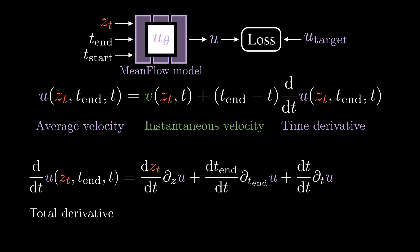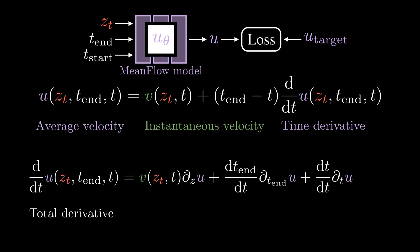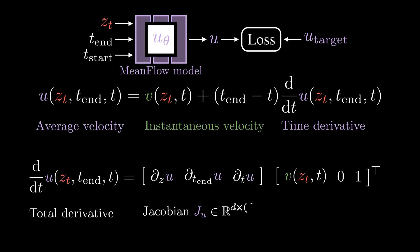Here, the first term describes how zt changes with respect to time t. As we have seen before, this is just an instantaneous velocity V. The second term is just zero, assuming t_end does not depend on t. The third term is one. We can now rewrite the total derivative as matrix vector product. This matrix is called the Jacobian matrix. It stores the first order partial derivatives that tell us how small changes in inputs affect all outputs.